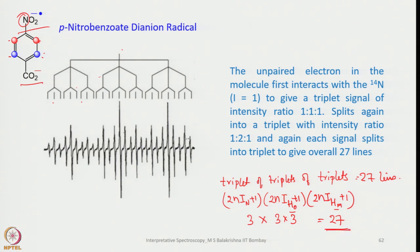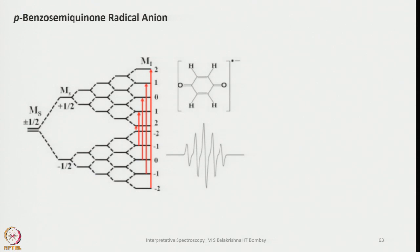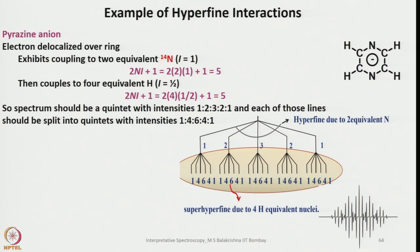The para-nitrobenzoic anion radical very nicely shows hyperfine splitting in this fashion with 27 lines — a triplet of triplets of triplets. Now let us look at benzo semiquinone radical anion. Here the unpaired electron is coupled equally to 4 hydrogen atoms (I = ½), so we see a quintet. The corresponding transitions are also shown, and this is called the benzo semiquinone radical anion.